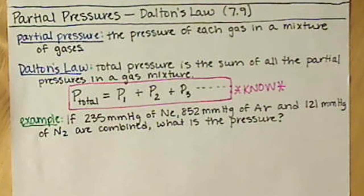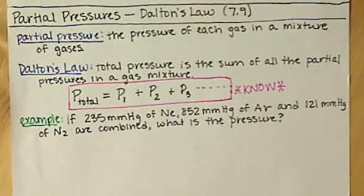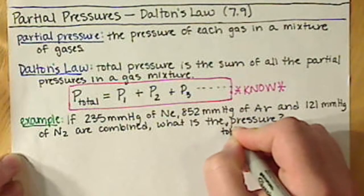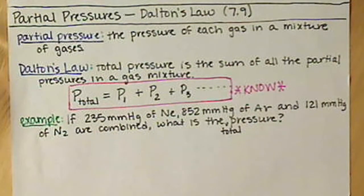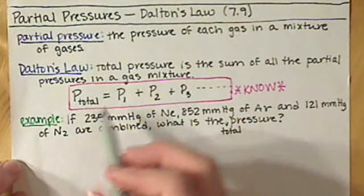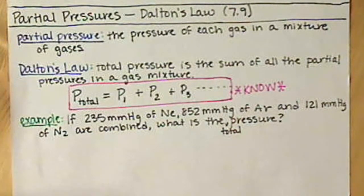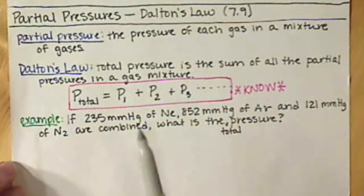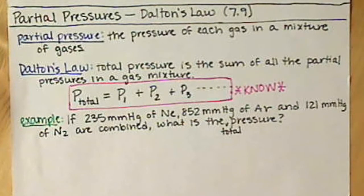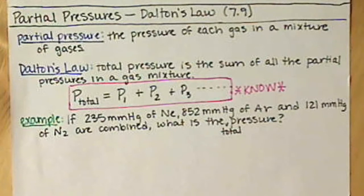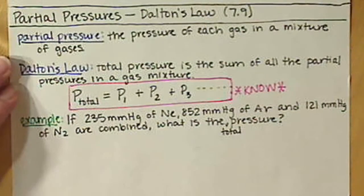So if we have a combination of three gases — neon, argon, and nitrogen — and we have a certain partial pressure of each of those, we want to know what is the total pressure. The only trick here to Dalton's Law is to make sure that all of your units are the same. So if one were given in atmospheres, you'd want to convert them all to millimeters of mercury or all to atmospheres. Unless the question specifies a unit, it doesn't matter what you convert to — all that matters is that they are all the same.